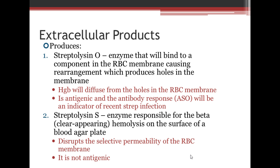Strep pyogenes produces several extracellular products. Number one is streptolysin O — an enzyme that binds to a component in the RBC membrane, causing rearrangement which produces holes in the membrane. The hemoglobin diffuses out of the holes, causing the cell to collapse. In an antigen-antibody response, ASO (anti-streptolysin O) will be an indicator of recent strep infection. Students can remember that the O looks like a hole, producing the hole in the membrane. Streptolysin S is responsible for beta hemolysis on the surface of a blood agar plate — it produces a clear appearing area and disrupts the selective permeability of the RBC membrane. It is not antigenic.